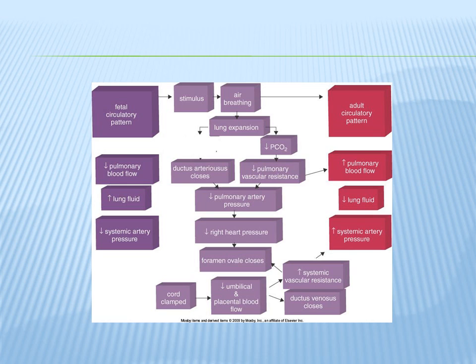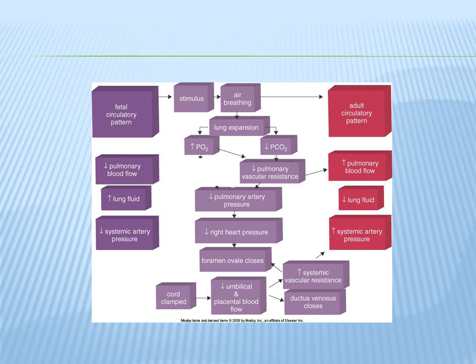What if the ductus arteriosus did not close? If the ductus arteriosus did not close, pulmonary artery pressures would not be able to decrease fully, right heart pressures would not decrease fully, and the foramen ovale wouldn't be able to close — resulting again in persistent fetal circulation. All of these are possible problems we will address when talking about neonates in upcoming chapters. That concludes this PowerPoint.